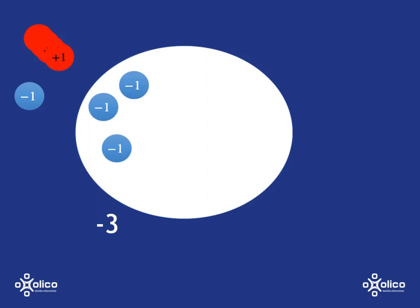If we throw in one hot disk into that pot, the cold disk and the hot disk are going to cancel each other out and come to a neutral temperature. In other words, the negative one and adding one are going to get you to zero. So what we have in this pot is a temperature of negative two, because the plus one and the negative one neutralize each other to zero.